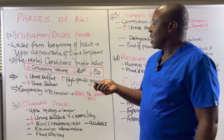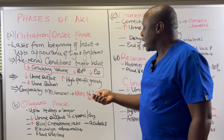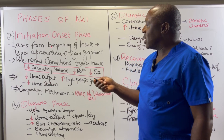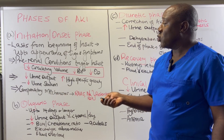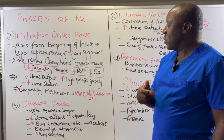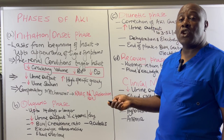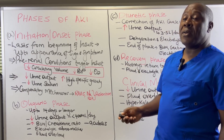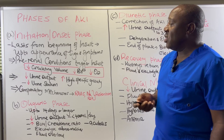During the onset phase, we have decreased urine output because our kidneys are not functioning as they should. We have a high specific gravity of urine and decreased sodium. It is during this onset phase that the kidneys issue compensatory mechanisms — they put in place mechanisms to try and overcome the pre-renal conditions interfering with perfusion. For example, they release renin to activate the renin-angiotensin-aldosterone system to bump up blood pressure, and the kidneys hold on to sodium and water to try and increase perfusion.